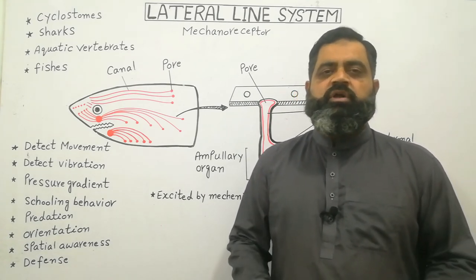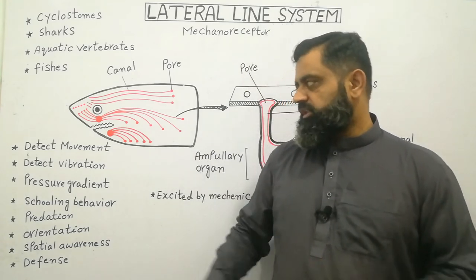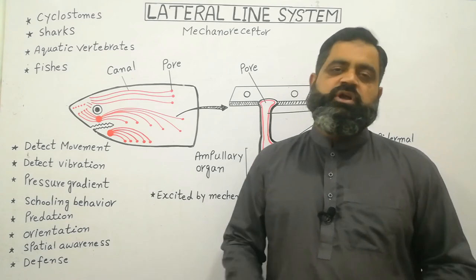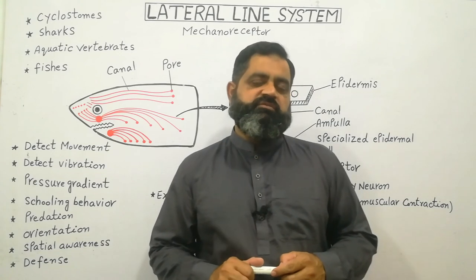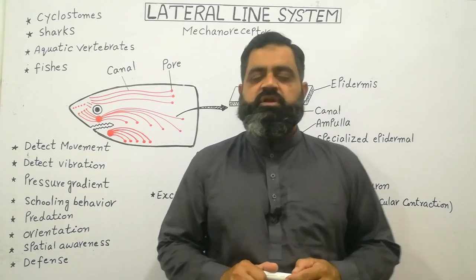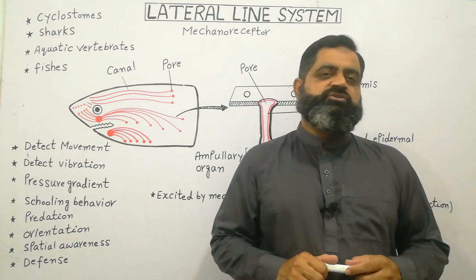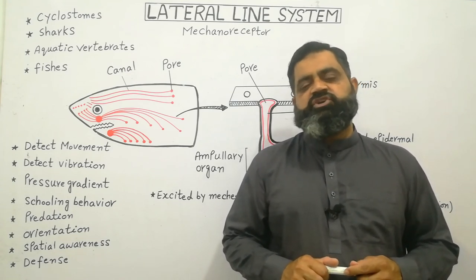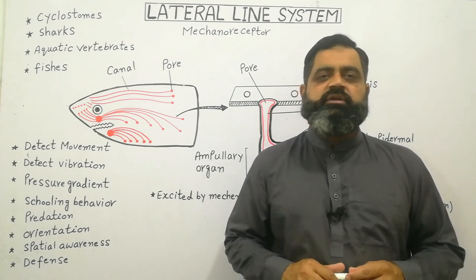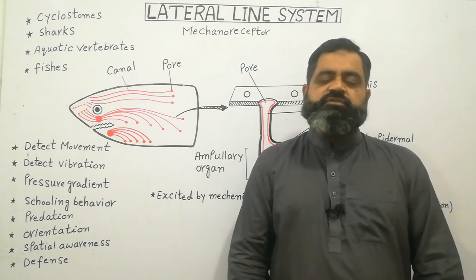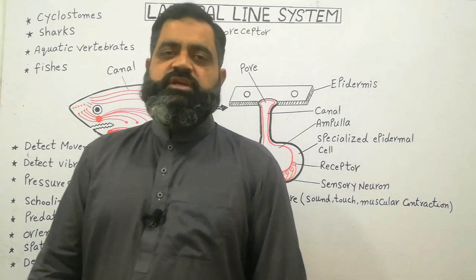This system also helps in orientation and spatial awareness, using impulses coming from all around the body. Overall, the lateral line system is a type of mechanoreceptor present in aquatic vertebrates that helps animals live in their environment. I hope you have understood this lecture — please like, subscribe, and share with your friends. See you in the next lecture, bye.